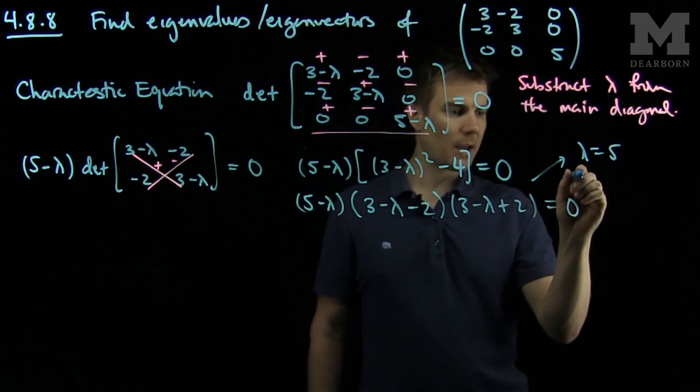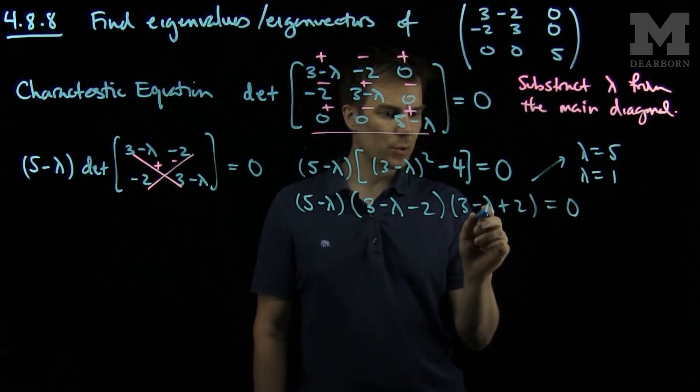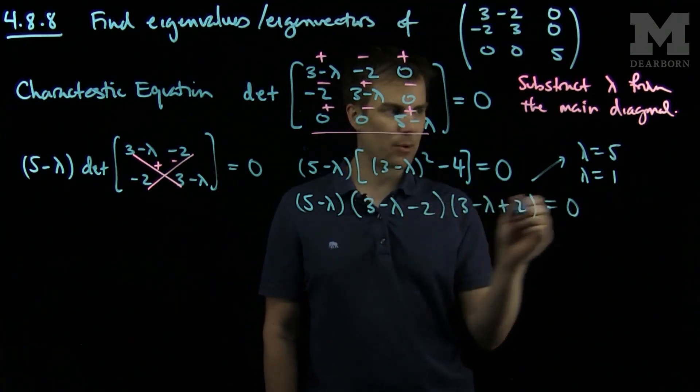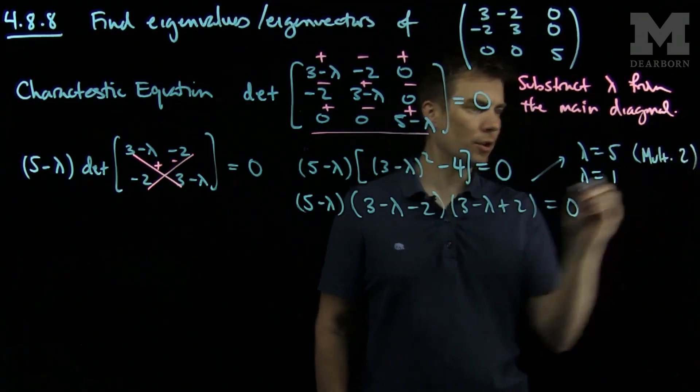That comes from the first term. This expression is 1 minus lambda, so that will give me lambda equals 1. And this will tell me that lambda is 5.